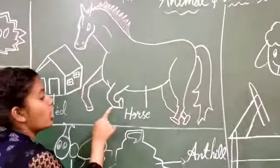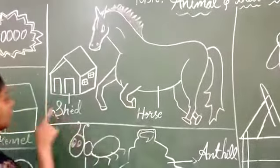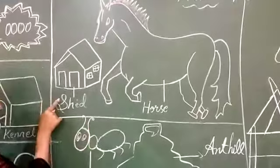Children, what is this? This is a horse. Horse lives in a shed. Horse lives in a shed.